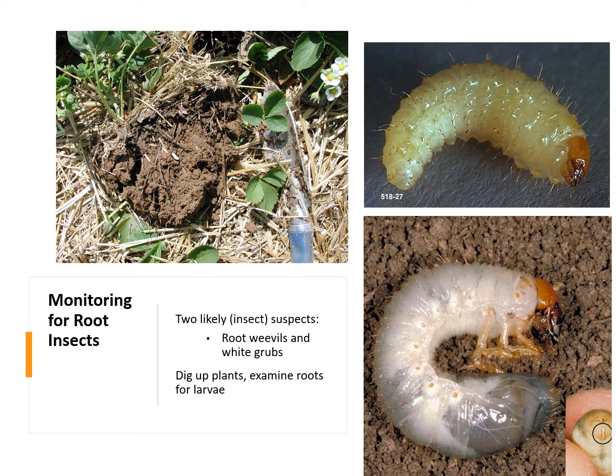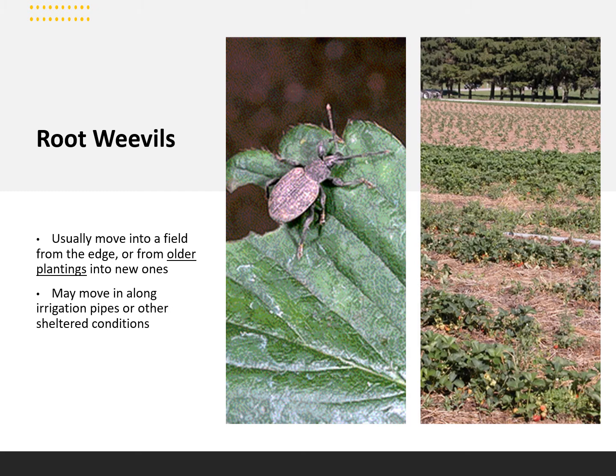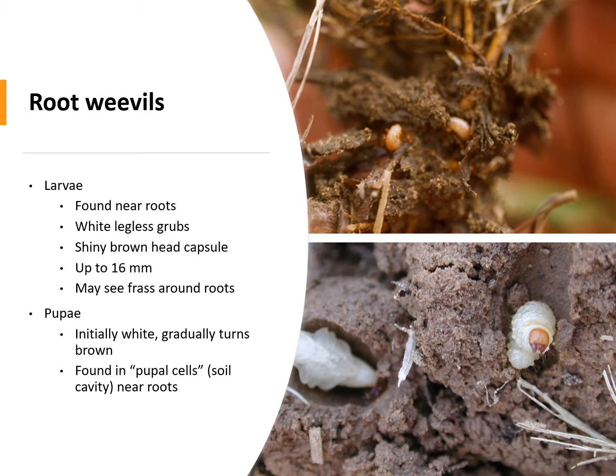If you suspect insects, it will likely be root weevils or white grubs. Dig up a plant and examine the roots to look for larvae. There are several species of root weevils that feed on strawberry roots, including the black vine weevil and strawberry root weevil. They usually move into a field from the edge or from older plantings, and may also move in along irrigation pipes. Notches in the leaf aren't a problem themselves, but are more indicative of a problem next year with larvae.